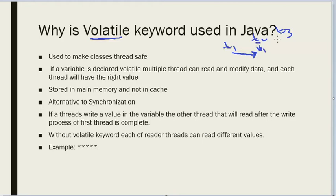Thread two and thread three can't modify the data while thread one is modifying it, or they can't read that data while thread one is modifying it. So you kind of lock the variable by using the volatile keyword — the variable or object.